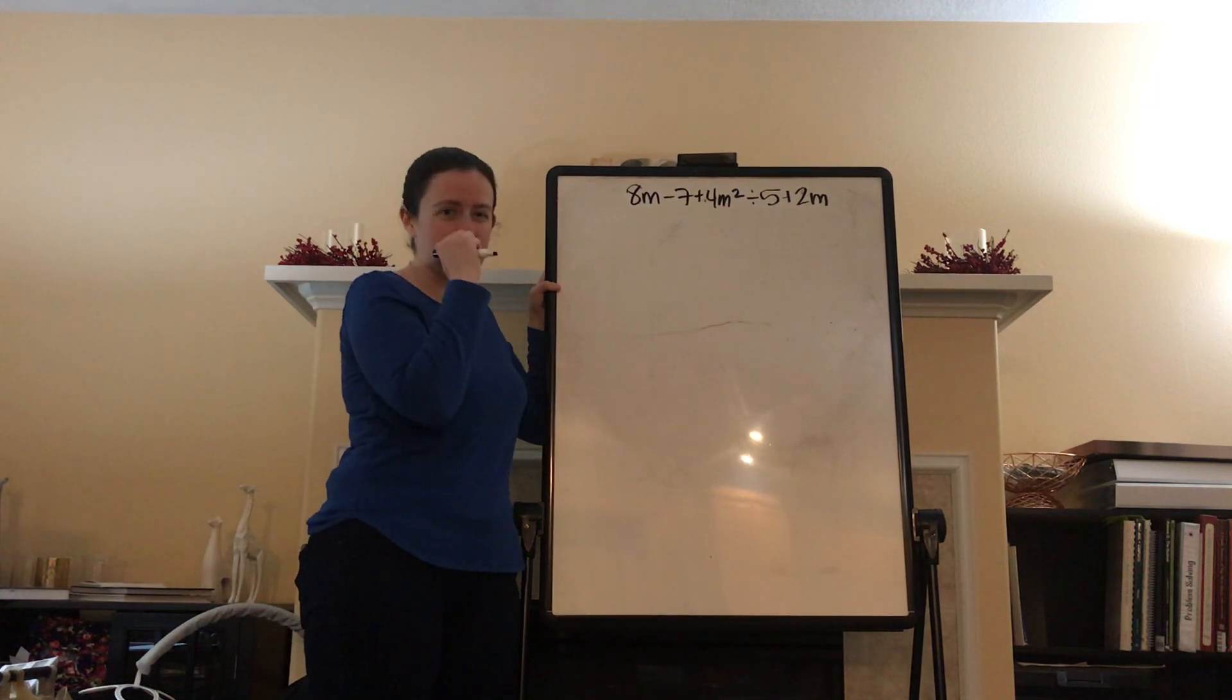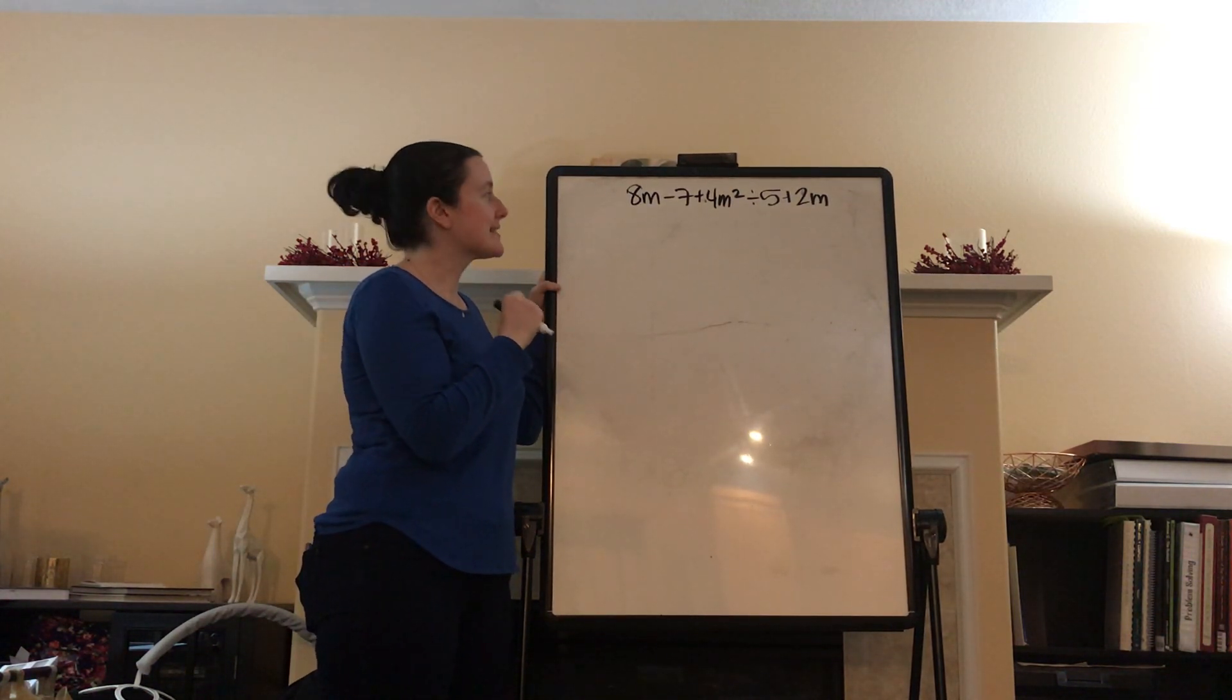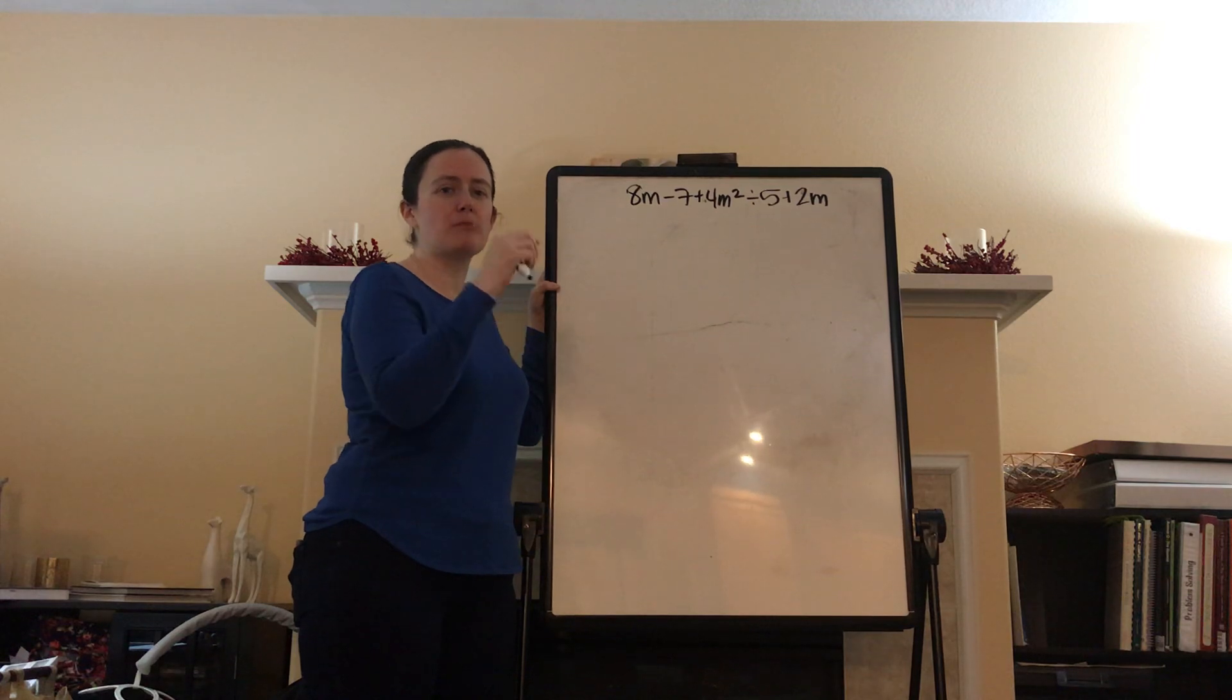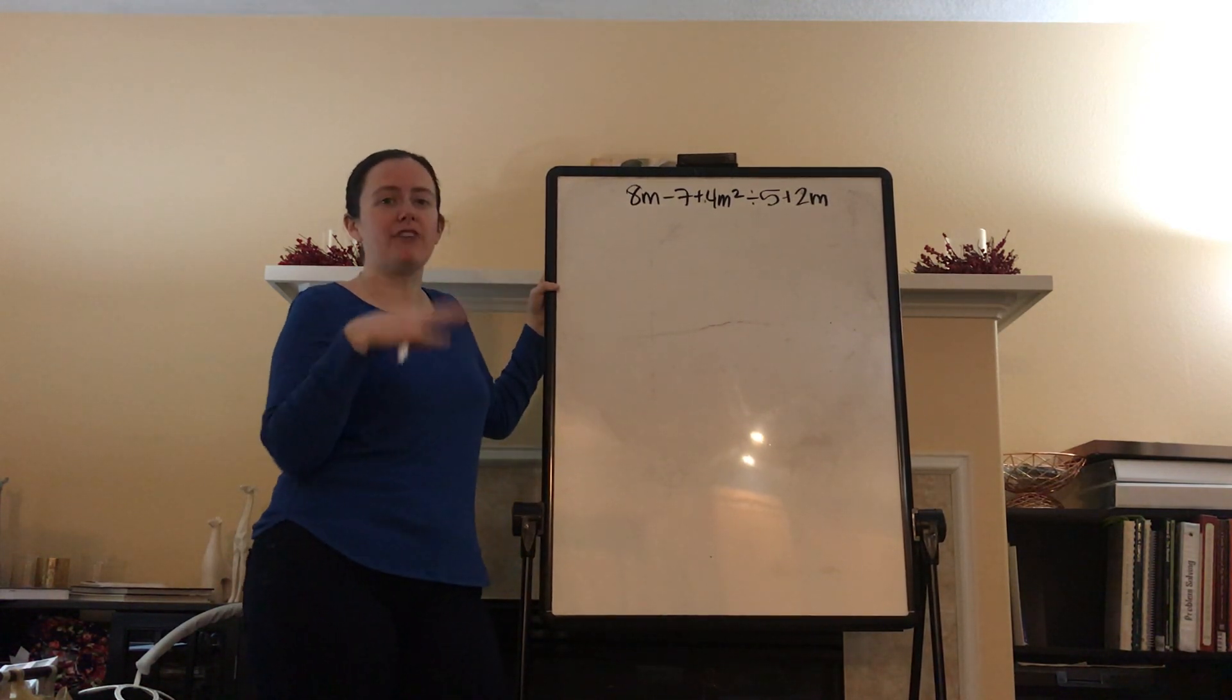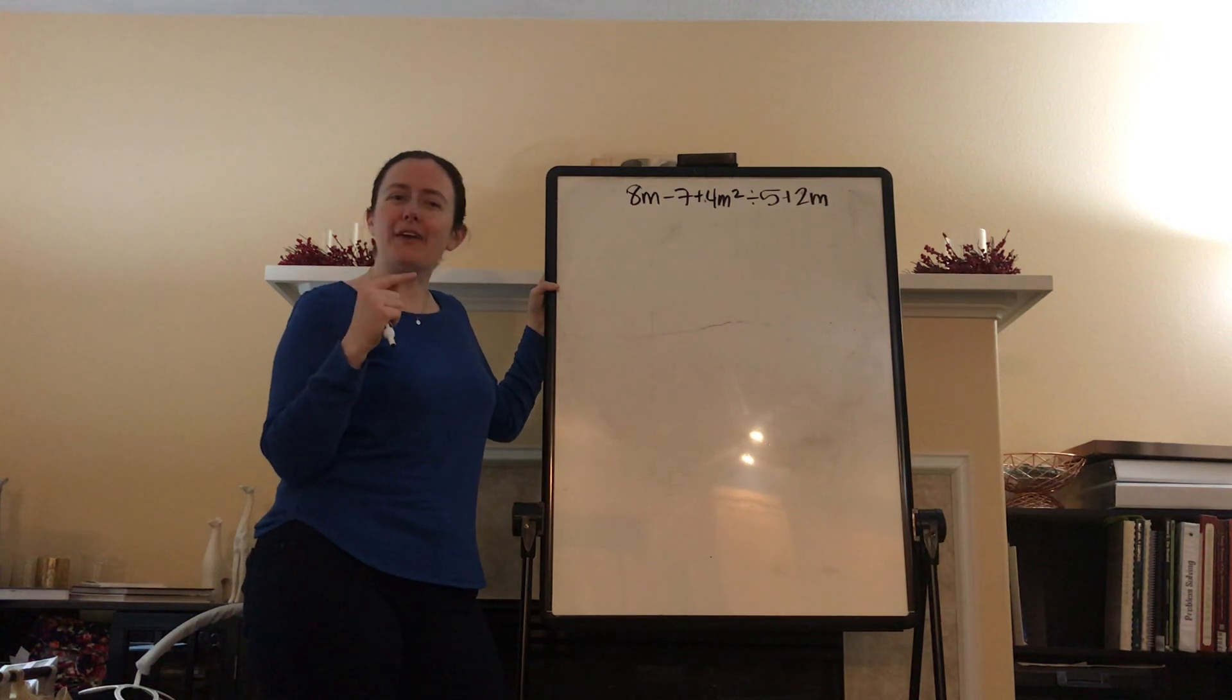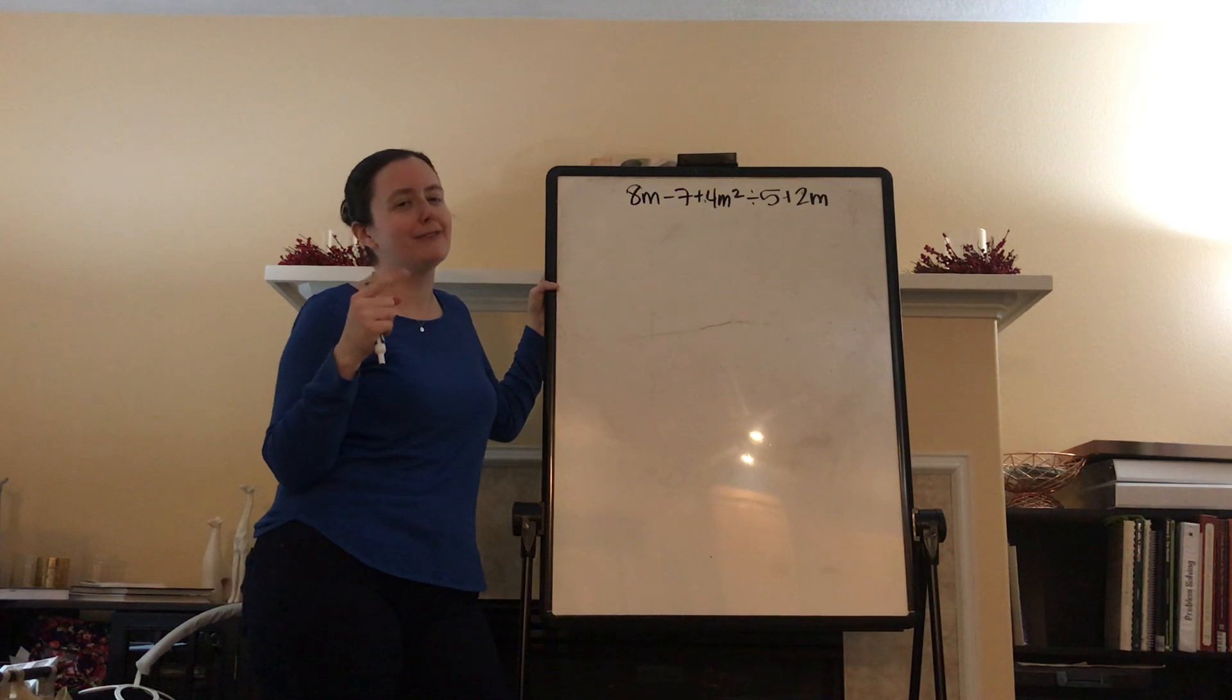Here I have my polynomial. Well, it's really a trinomial. And it says 8m minus 7 plus 4m squared. And then it's divided by the binomial of 5 plus 2m. Hopefully, you look at that and go, that's not quite right.